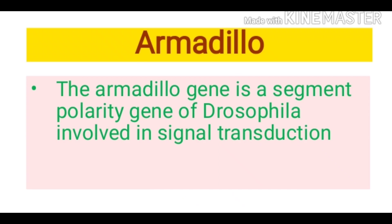The third option is armadillo — a protein produced by the armadillo gene, a segment polarity gene found in Drosophila, mainly involved in signal transduction. This armadillo protein mainly determines the polarity of segments in Drosophila. As far as the CSIR NET exam is concerned, Drosophila developmental biology — especially proteins involved in anterior-posterior axis development and segment determination — is of much significance.